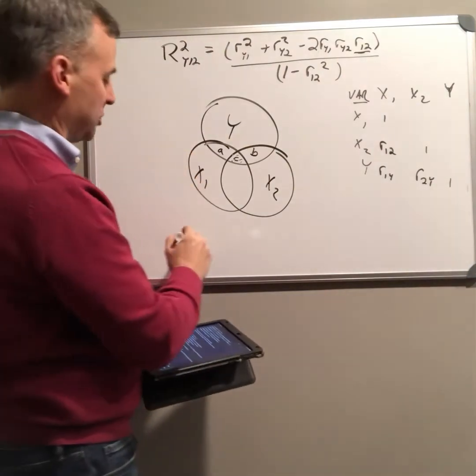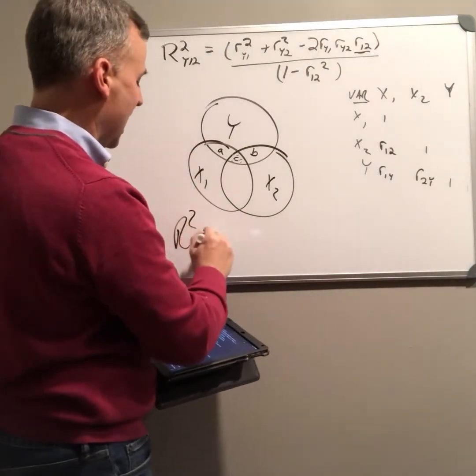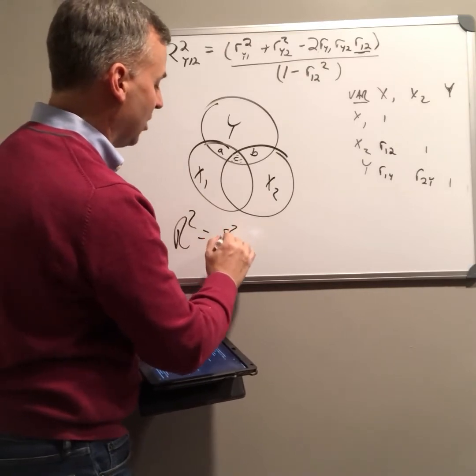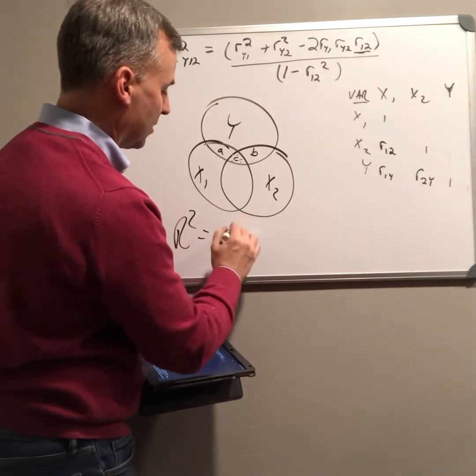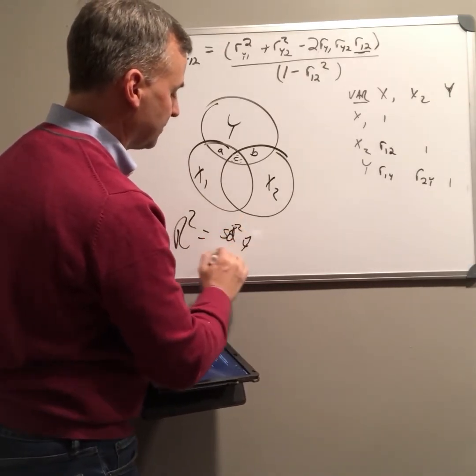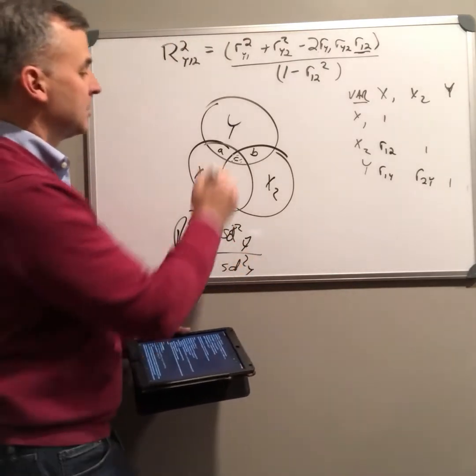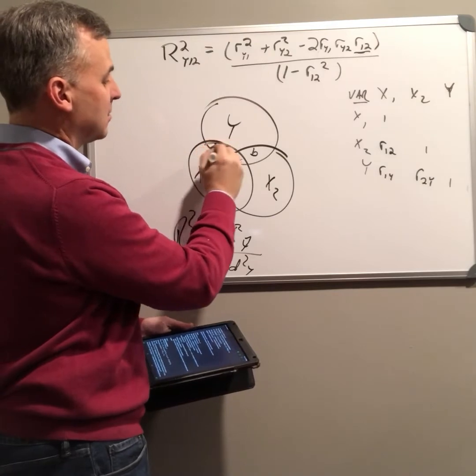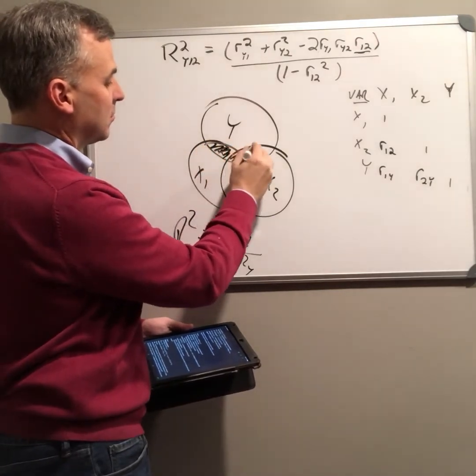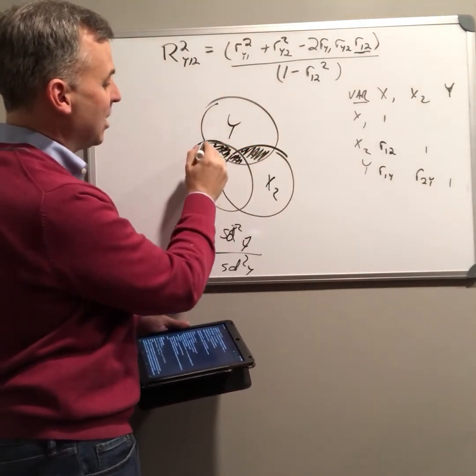So now our definition of r squared has not changed. It's still the variance explained over the total variance. So it represents what's inside of here.